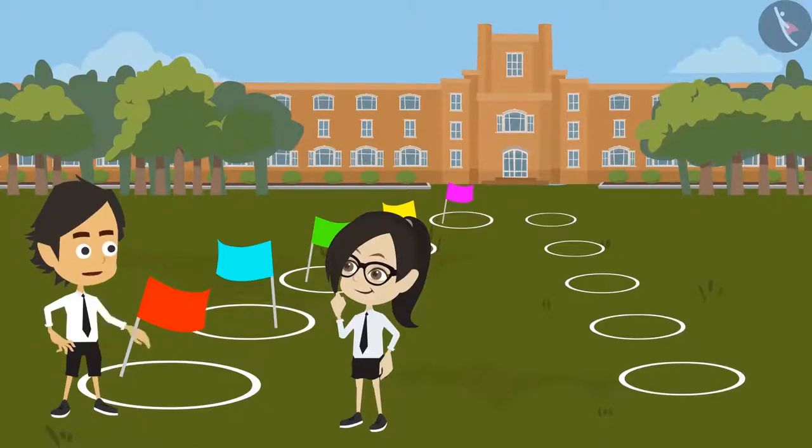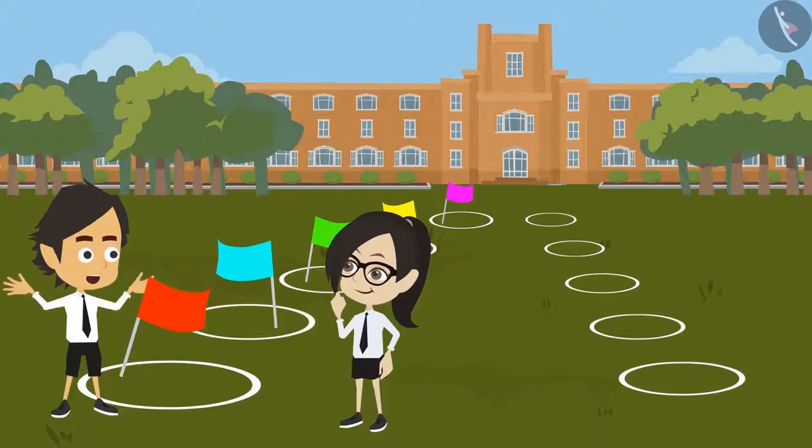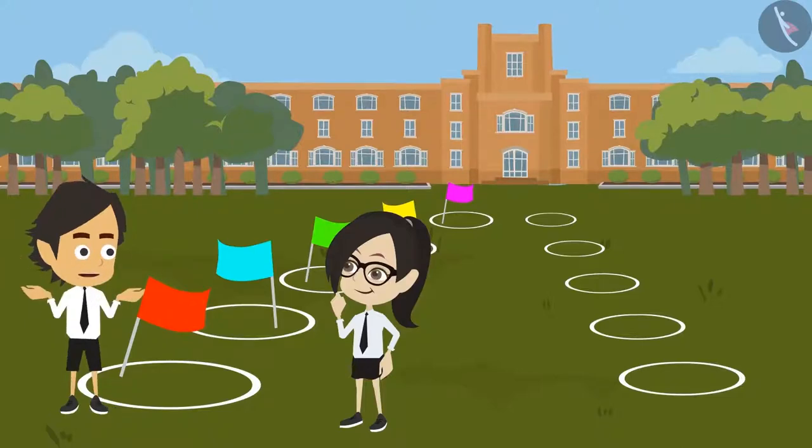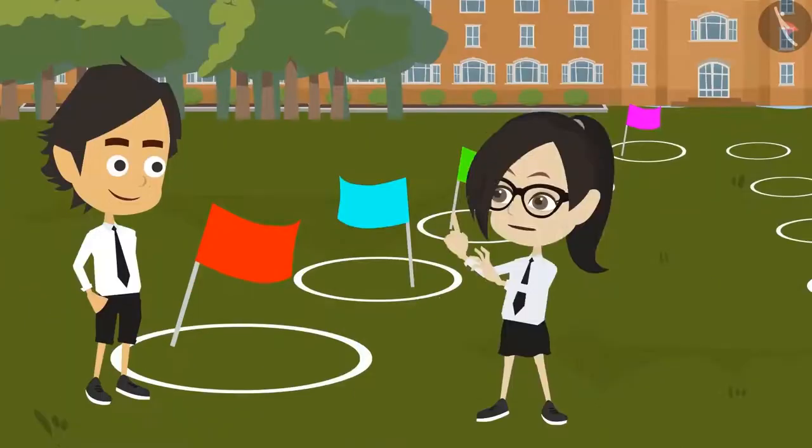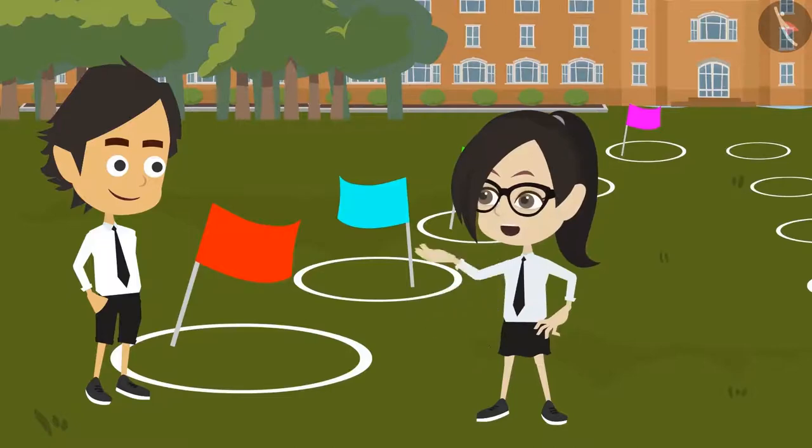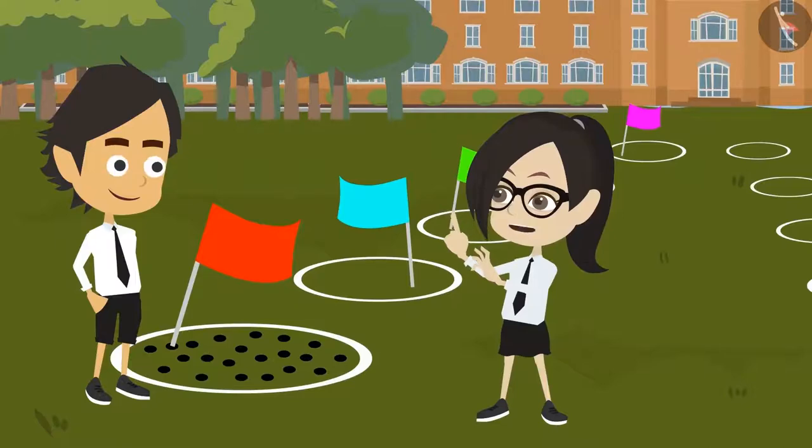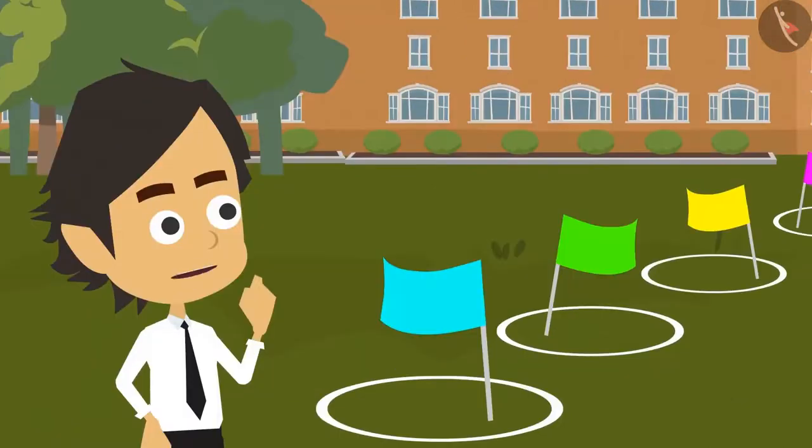Look carefully. All flags are in the centre of the circles. All are placed inside them. Oh, there are many points inside a circle. This does not mean that all points will be considered as the centre of the circle. Then what do we consider as the centre of the circle?